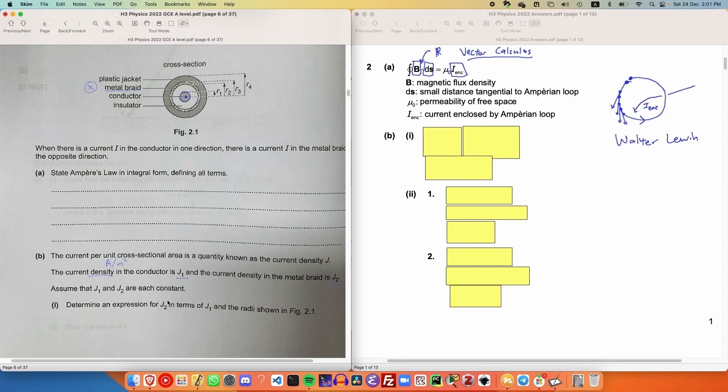We need to find an expression of J2 in terms of J1, and the radius given in the diagram. Whenever you are given a current density J, because it has the units of ampere per meter squared, in order to obtain a current I, you need to multiply it by an area, which has the units of meter squared. This will give you total amount of current flowing through a cross-sectional area of a conductor. Hence, in order to solve this question, we just need to find the cross-sectional area of the metal braid and the conductor.